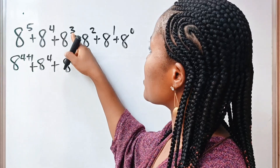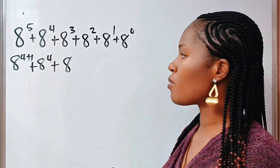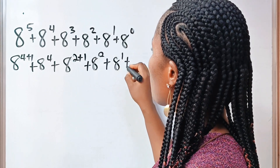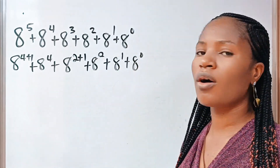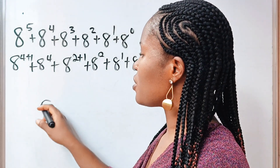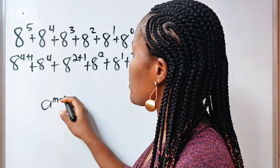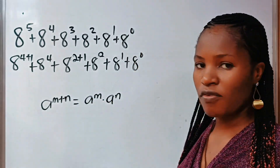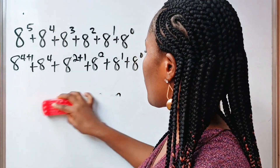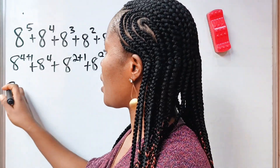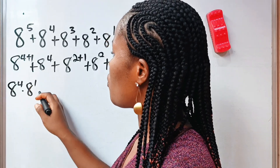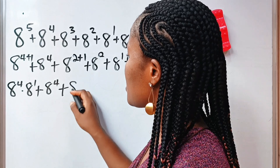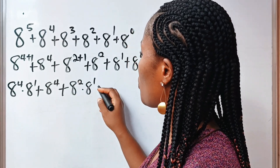Plus 8 to the power of — what can I do to get 2 from 3? That should be 2 plus 1, right? So, 8 to the power of 2 plus 1, plus 8 to the power of 2, plus 8 to the power of 1, plus 8 to the power of 0. Now, remember according to the law of exponents that 8 to the power of m plus n equals 8 to the power of m multiplied by 8 to the power of n. So that means this can be expressed as 8 to the power of 4 multiplied by 8 to the power of 1, plus 8 to the power of 2.